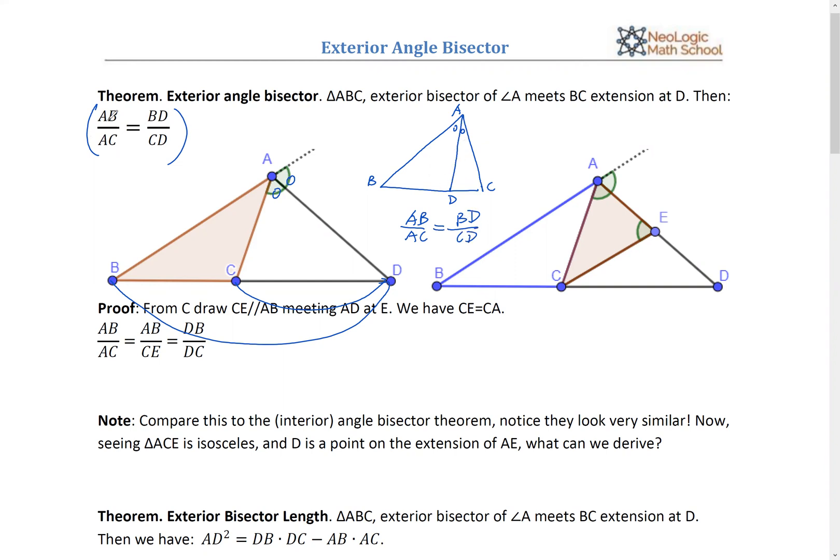AB divides AC equals BD divides CD, no? For interior bisector, now if you compare it to the exterior bisector, well, they look exactly the same. So if you can understand one, then you should be able to understand the other one, right? They look exactly the same.